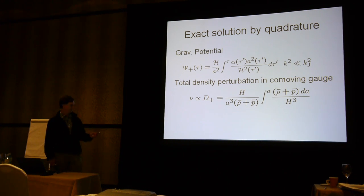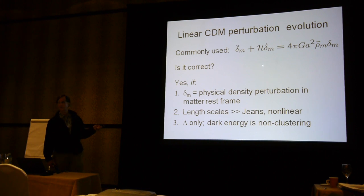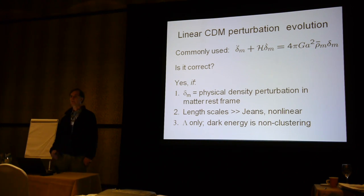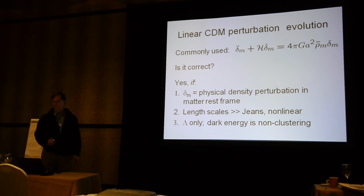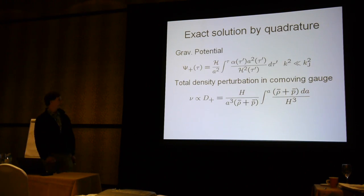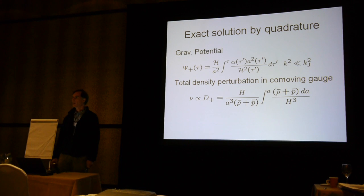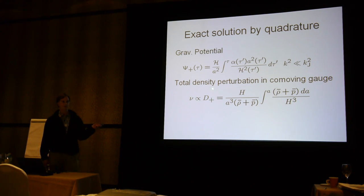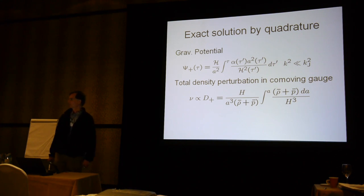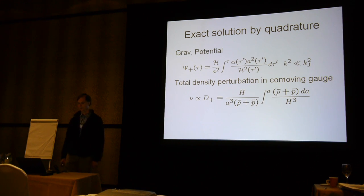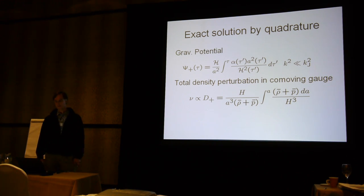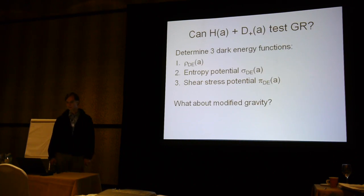One can parameterize the solutions to this equation in numerous ways. In my third lecture I will talk about the parameterization introduced by Eric Linder, but it is also possible to work directly with the solutions. One has to be careful because entropy perturbations and shear stress perturbations can modify the dynamics. While those are absent for cold dark matter, the dark energy could be exotic and may have shear stress or entropy perturbations.